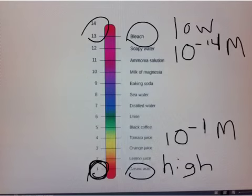So, acids have low pH, high concentration of hydrogen ions. Bases have a high pH, but low concentration of hydrogen ions.